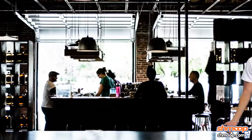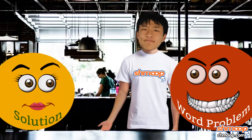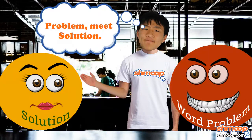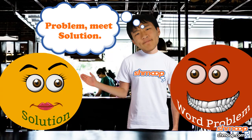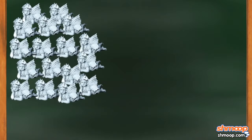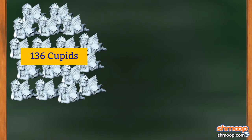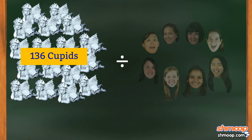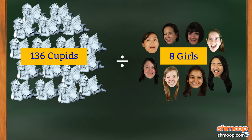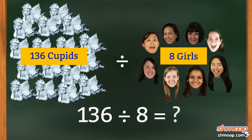Okay, now that we understand the particulars, we need to set up the problem. How do we get to our answer? Well, we've got 136 cupids, and they need to be divided evenly between eight people. So our problem should look like this: 136 divided by eight equals our answer.